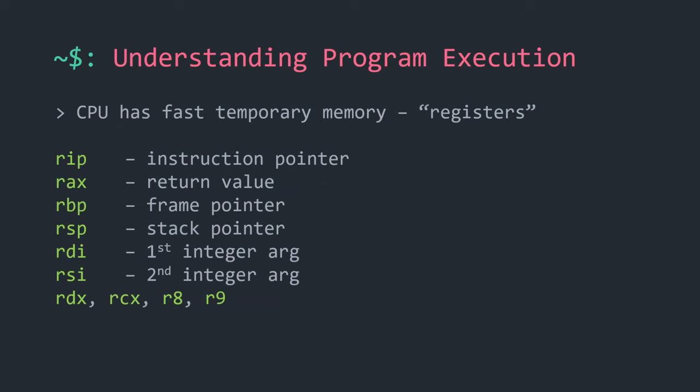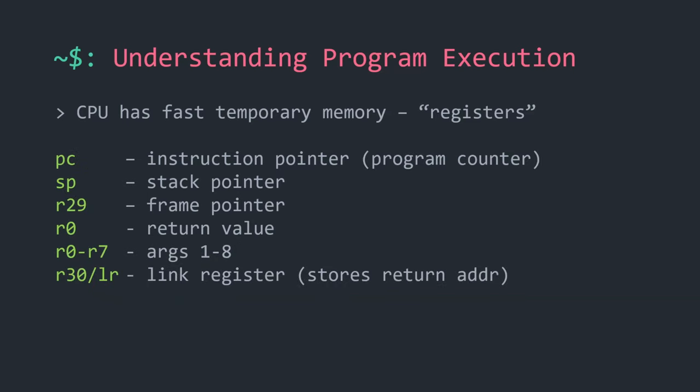Registers are the CPU's fast memory. Your computer has different levels of memory: storage, RAM, and then registers at the CPU level — the fastest temporary storage. Any time you execute a program, these registers are utilized for intermediary values, calculations, and passing arguments to functions. For Intel x86-64, function arguments are passed through registers like RDI, RSI, etc. For ARM64 (Mac M-series), the equivalent registers are used instead.